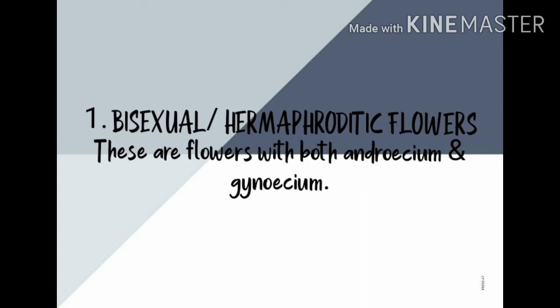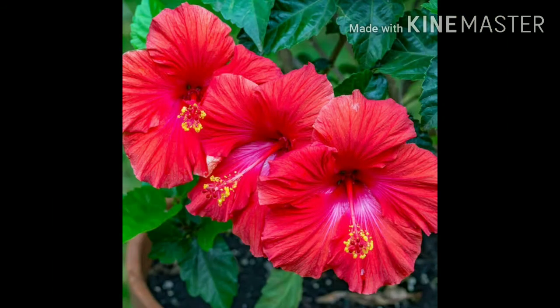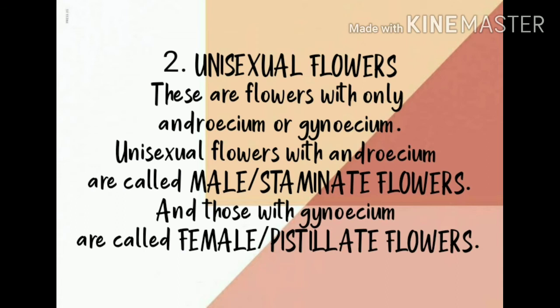These two — gynoecium and androecium — are both present in a single flower, and that kind of flower is considered a bisexual or hermaphroditic flower. An example is this picture here — this is a hibiscus. Hibiscus is a classic example of a bisexual flower. The next type in this classification is the unisexual flower. 'Uni' means one.